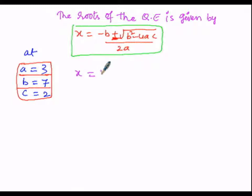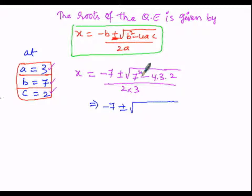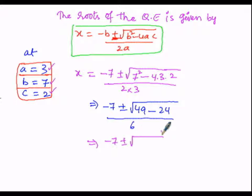Substituting the values: x = (−7 ± √(7² − 4·3·2)) / (2·3). That gives x = (−7 ± √(49 − 24)) / 6. Now, 49 minus 24: since 49 is the greater value with a positive sign, we subtract 24 from 49 — that is 9 minus 4 is 5, and 4 minus 2 is 2 — giving us 25. So x = (−7 ± √25) / 6.